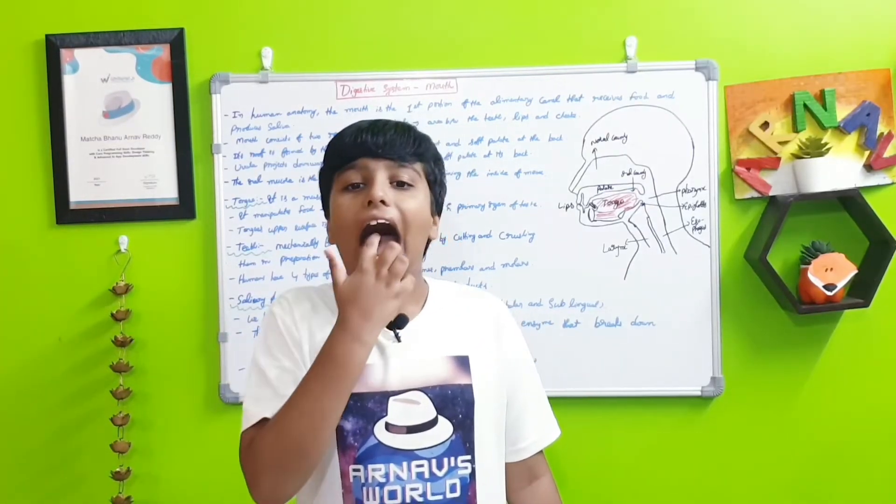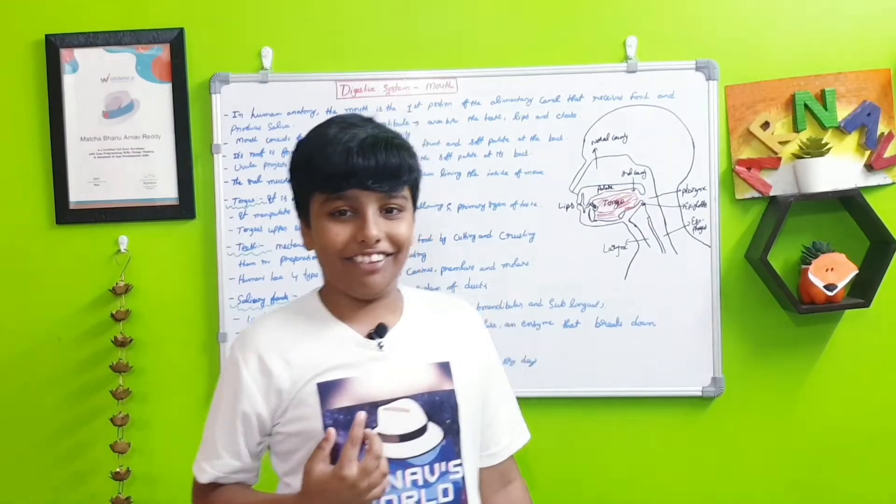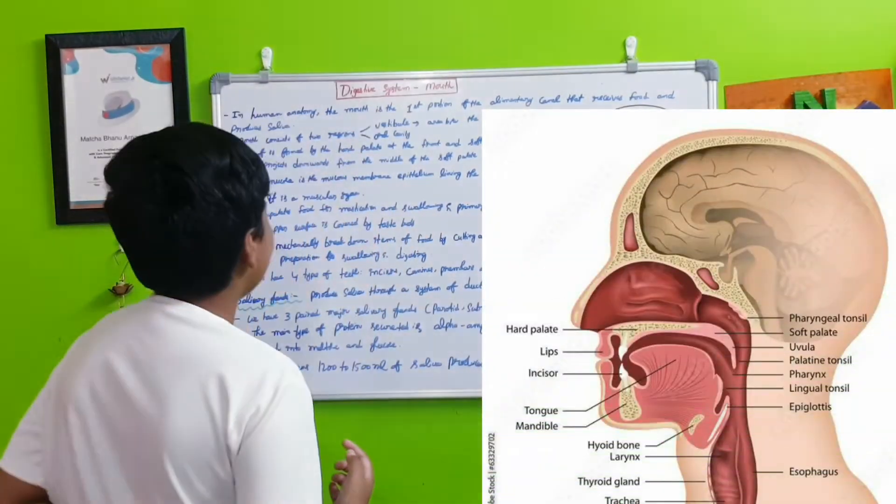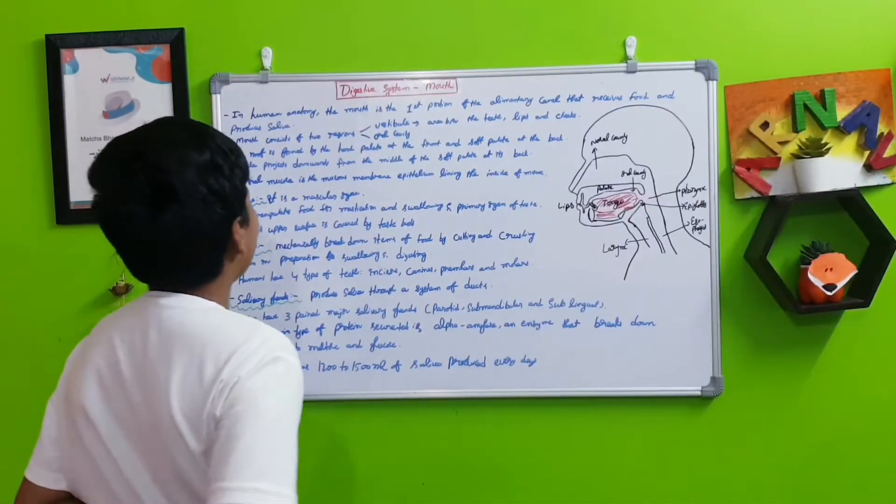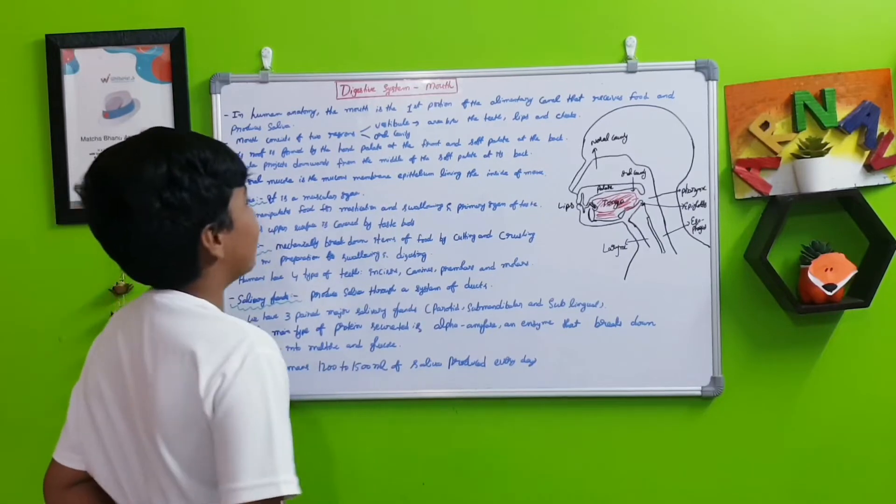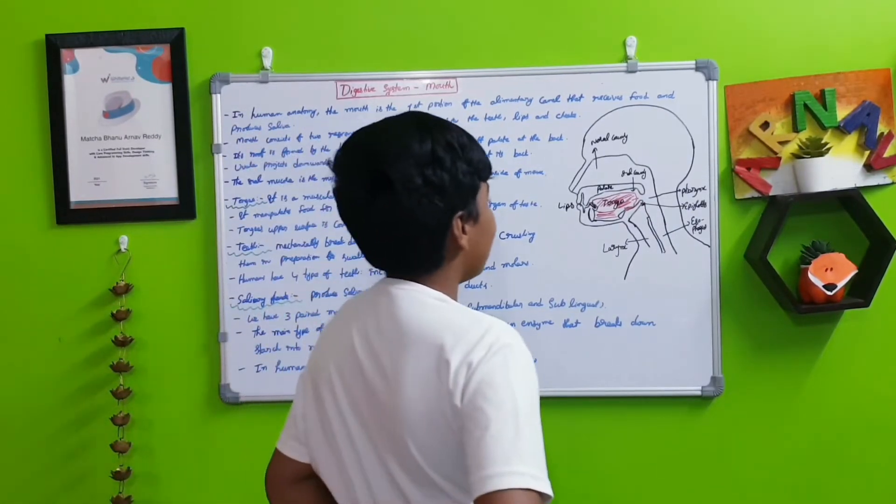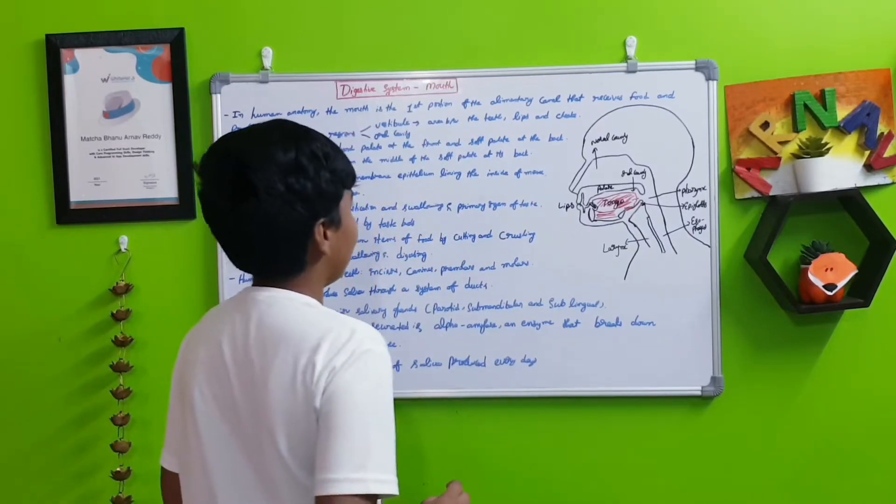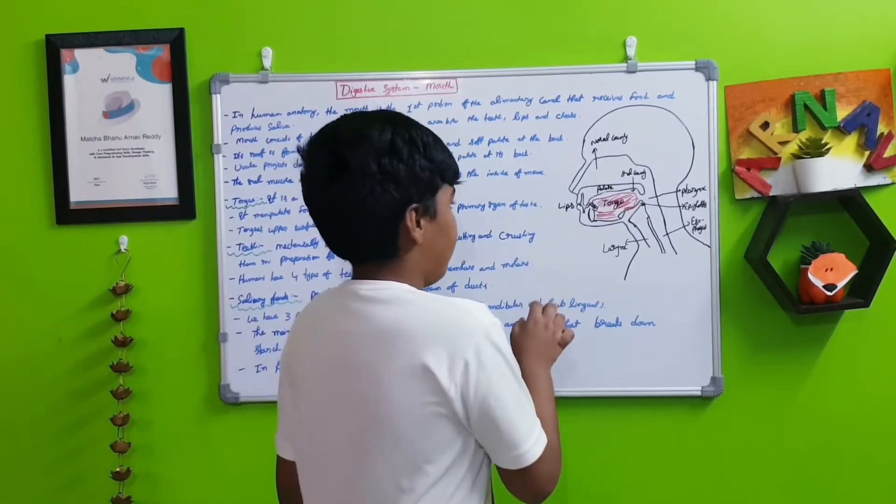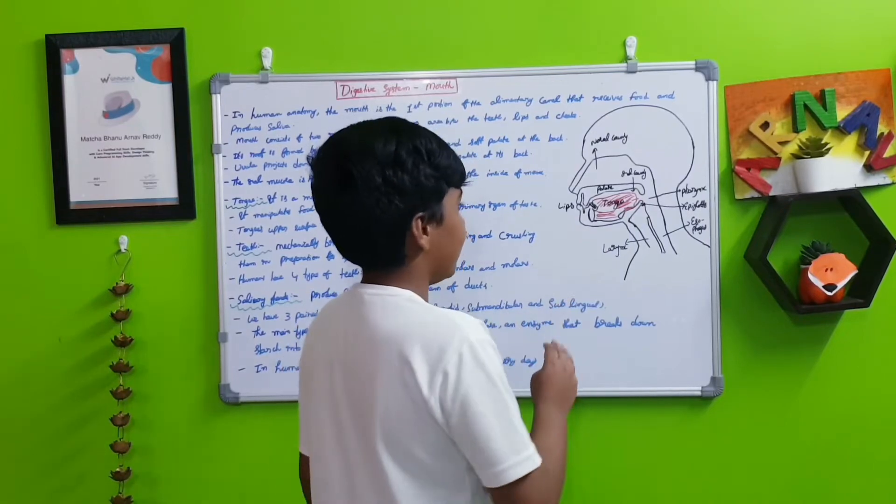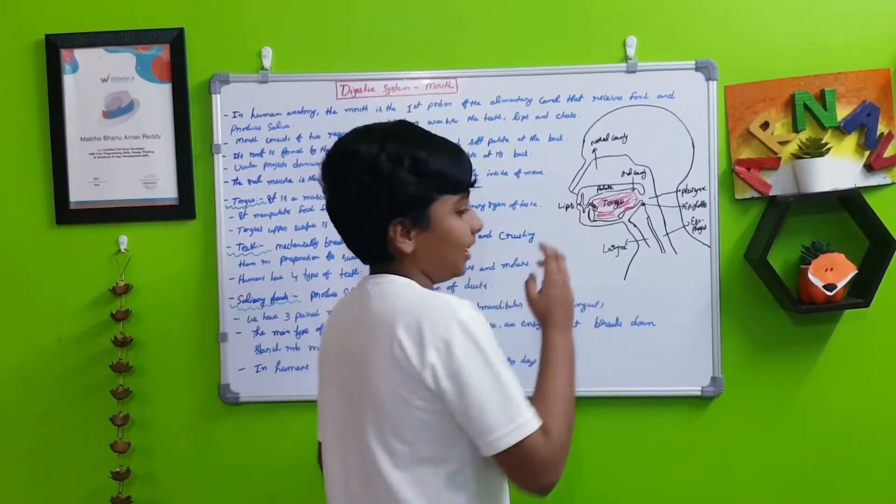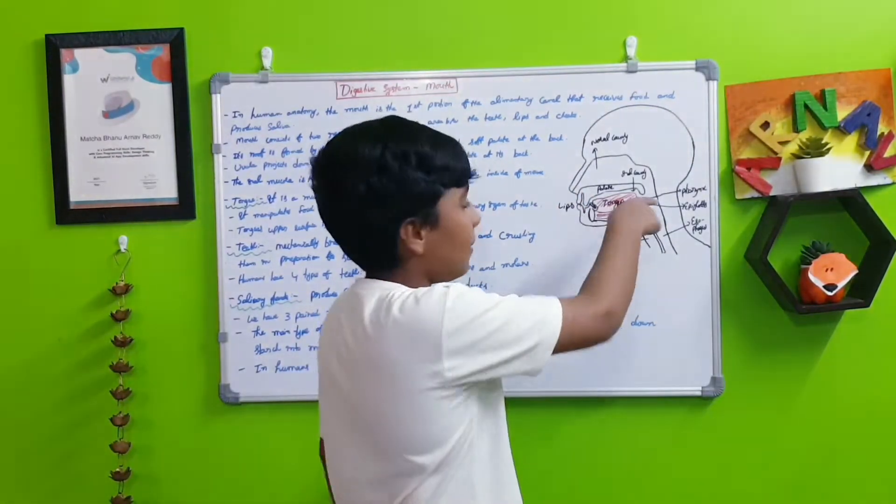Its roof is formed by the hard palate at the front and soft palate at the back. In the mouth there are four main parts: the lips, the teeth, the tongue, and the palate.